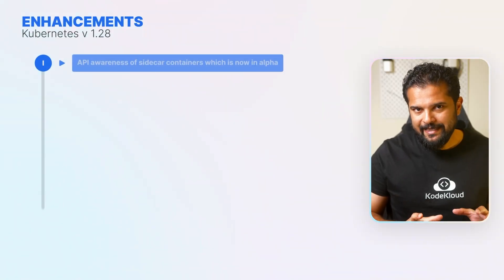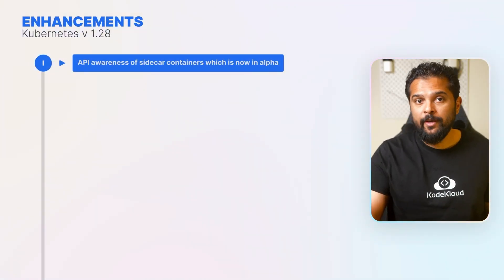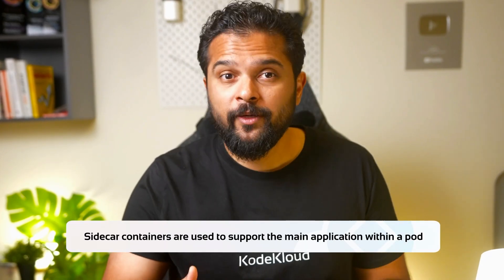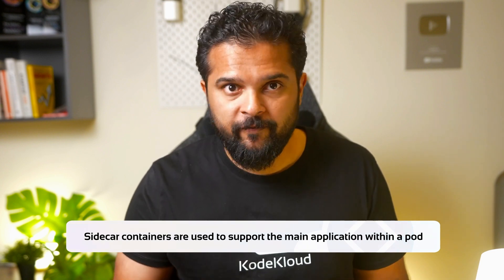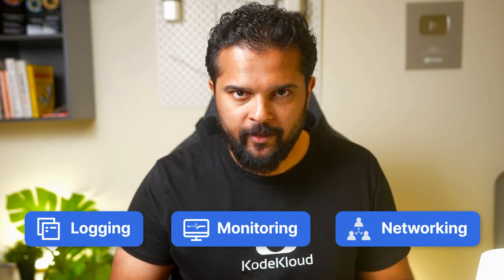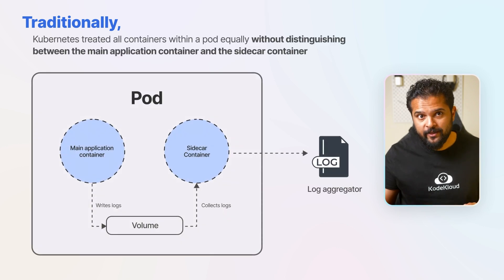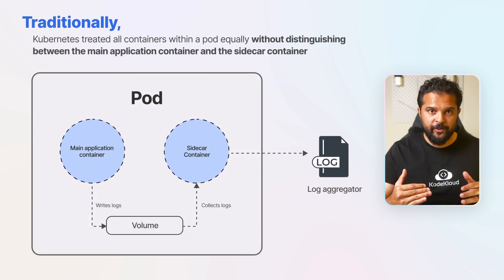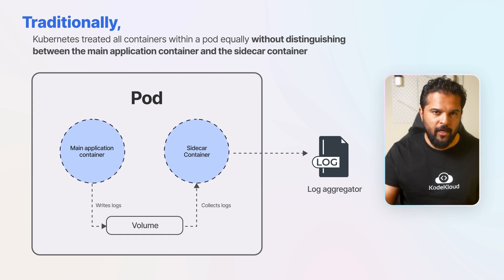The first on our list is API awareness of sidecar containers, which is now in alpha. In Kubernetes, sidecar containers are used to support the main application within a pod by providing supplementary features like logging, monitoring, and networking. However, traditionally, Kubernetes treated all containers within a pod equally without distinguishing between the main application container and the sidecar container.